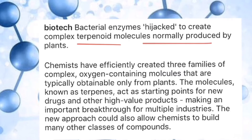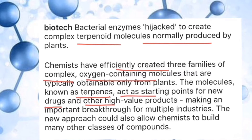There are terpenoid molecules that can be used to regulate bacterial enzymes. Chemists have efficiently created a family of complex oxygen-containing molecules typically obtained from plants, known as terpenes. These are very complex organic molecules that act as a starting point for new drugs and high-value products, making important breakthroughs across multiple industries.